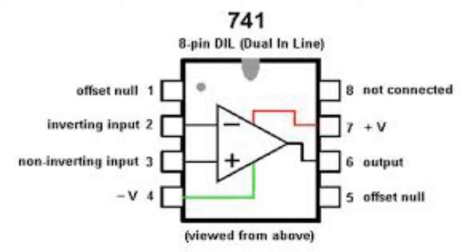Fullagar proposed the internally compensated 741 Op Amp in mid-1967, and it has been in production for nearly 50 years, being the most popular Op Amp of all time.